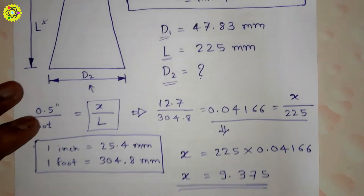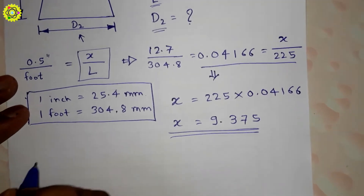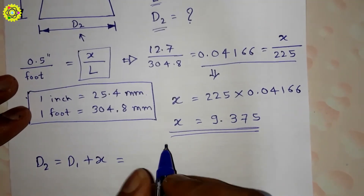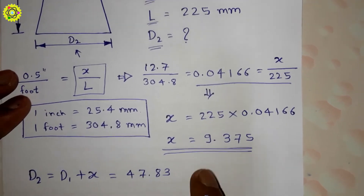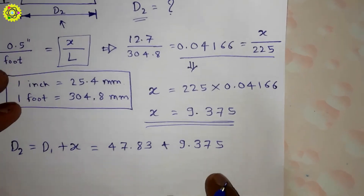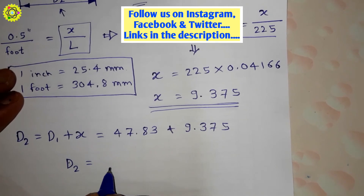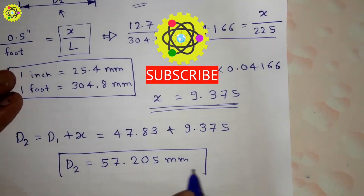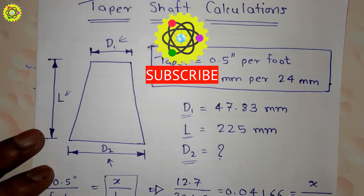To calculate d2, we add the x value to the d1 value. So d2 = d1 + x = 47.83 + 9.375, which gives d2 = 57.205 mm. This is our answer.